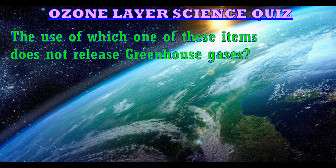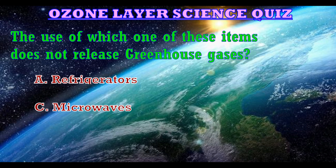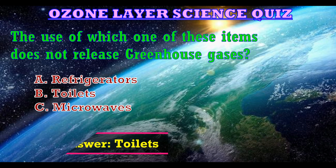The next question is: the use of which one of these items does not release greenhouse gases? The three options are: A. Refrigerators, B. Toilets, C. Microwaves. The correct answer is Toilets.